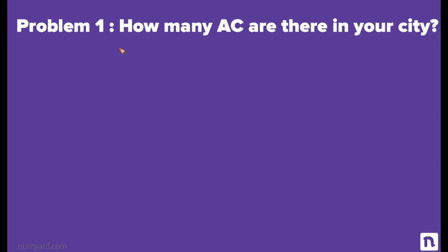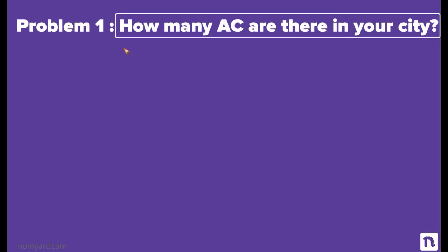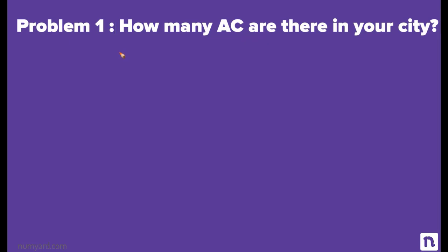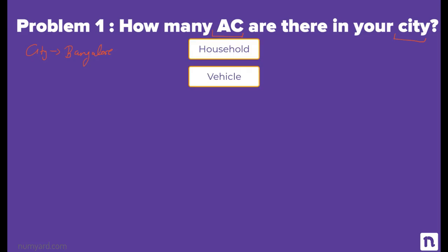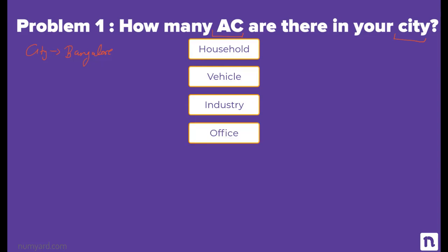The first guesstimate question: how many ACs are there in your city? I'll take a pause — see if you can attempt the question. In the solution, my city is Bangalore, the IT hub of India. We need to understand the potential users of AC: it can be households, vehicles, industries, offices, and more. We need to clarify with the interviewer which type of AC he is talking about.